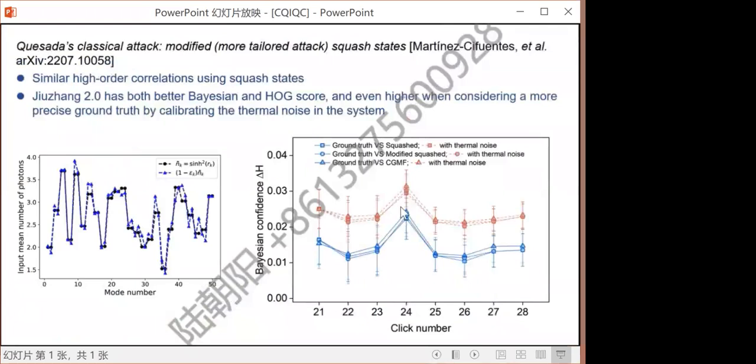The second, the most recent spoof attack is from Nicholas. He will give a talk later. They came up with the squashed state, which is maximally similar to our target squeezed state. It shows that the squashed state can have very similar high order correlation. They also try even more tailored attack by modifying the squeezing parameters, different from the actual experimental parameters, and to check whether it can generate a higher Bayesian test score than experimental samples. For Jiuzhang 2 data, the experimental sample score is higher. We have also included more precise quantum tools by calibrating the thermal photons in the system. We can show, as in the data point, the advantage of the experimental samples can get even higher.